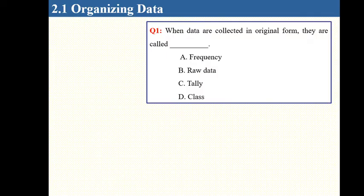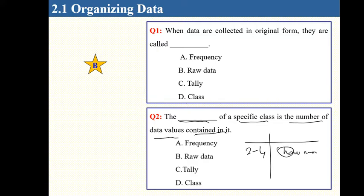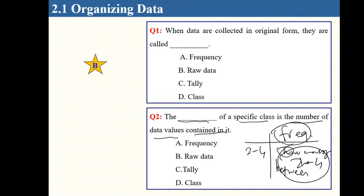Review questions: When data are collected and unorganized, they are called raw data. The blank of a specific class is the number of data values contained in it — this is called frequency. The frequency of a class is the number of values contained within it.